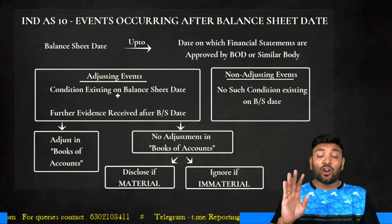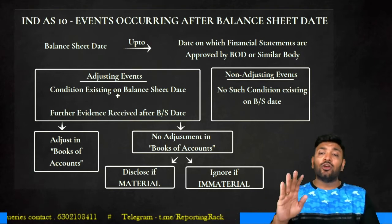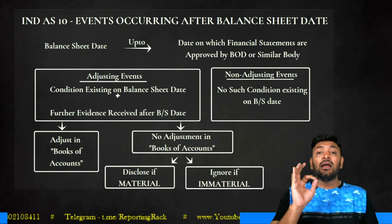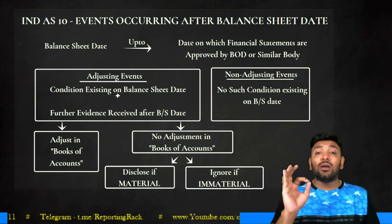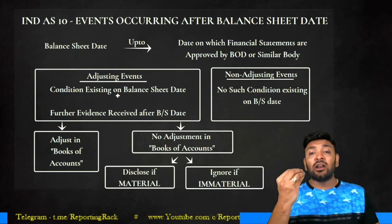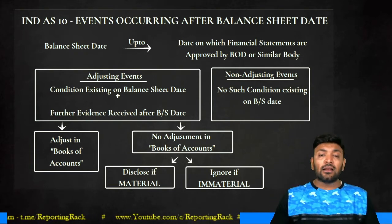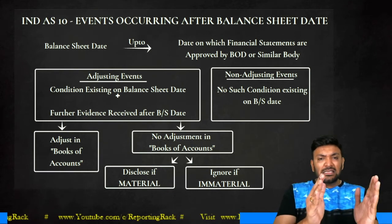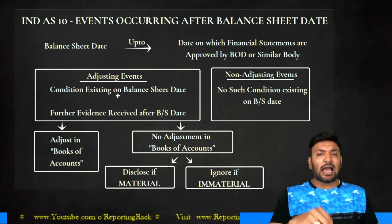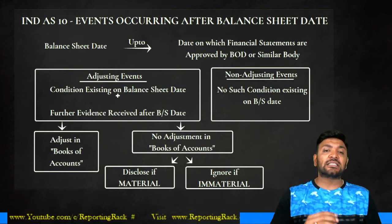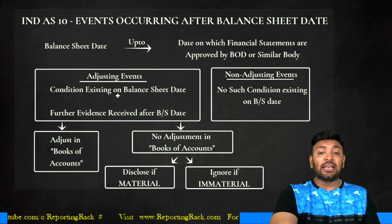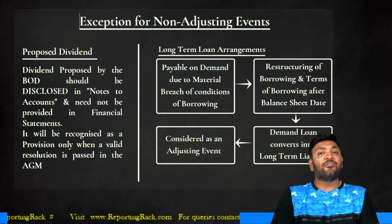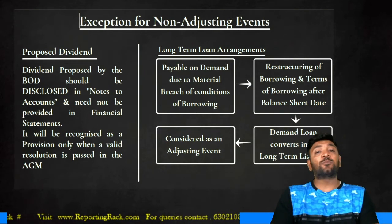For non-adjusting events, no transaction needs to be adjusted and no changes are required in your books of accounts. However, if a material event occurred and it is non-adjusting in nature, you must at least disclose it so the user knows such a material event actually occurred. If it is immaterial, no such disclosure is necessary — no recognition or adjustment in books of accounts is required.